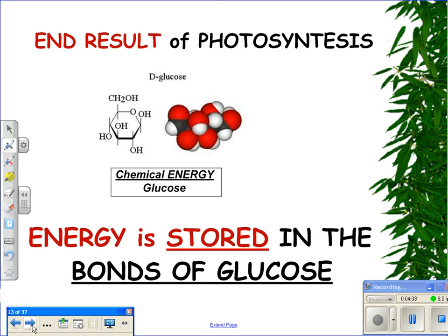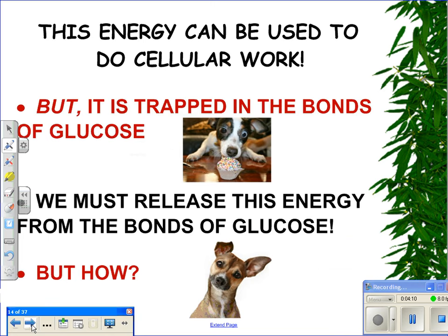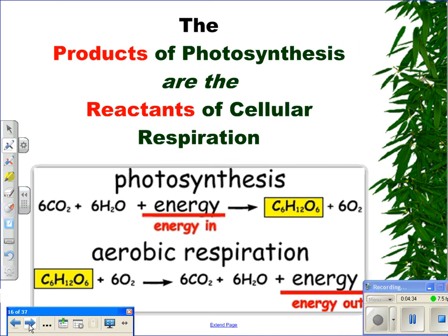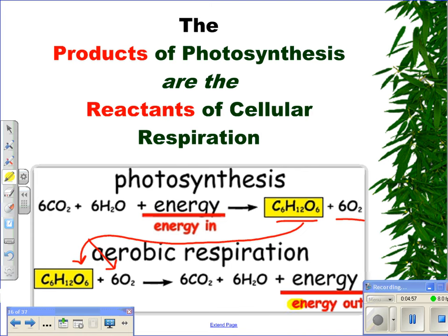The end result of photosynthesis is the energy stored in the bonds of the glucose molecule. This energy can be used to do cellular work, but it's trapped in the bonds of glucose. To release this energy from the bonds, we have to perform a very important process called cellular respiration. The cell will break down those glucose molecules and release the energy from the bonds. The products of photosynthesis are the reactants of cellular respiration — glucose and oxygen made during photosynthesis are going to be used in cellular respiration to get our energy out.